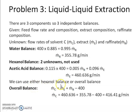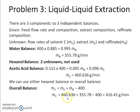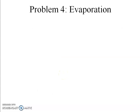Once m-dot-R and m-dot-E are known, we write the overall balance: m-dot-C plus 400 equals m-dot-E plus m-dot-R. This directly gives the amount of solvent required, which comes out to be 416.41 grams per minute. Very straightforward once the methodology is applied.